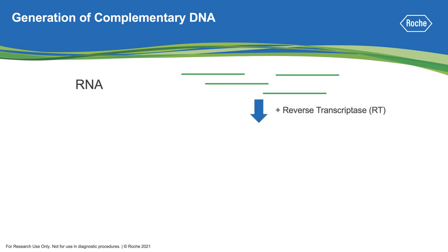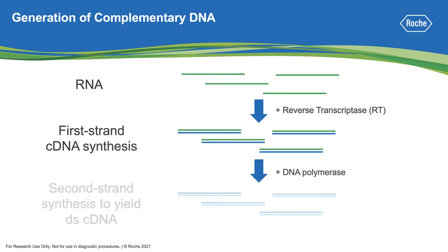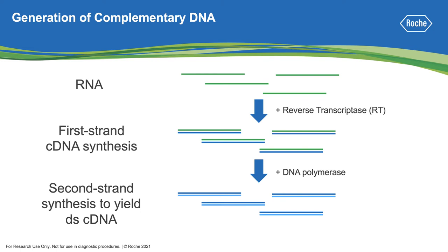This process involves an RNA-dependent DNA polymerase called reverse transcriptase that generates the first cDNA strand, followed by second strand synthesis carried out by a DNA polymerase. The cDNA is then used as a template for NGS library preparation.